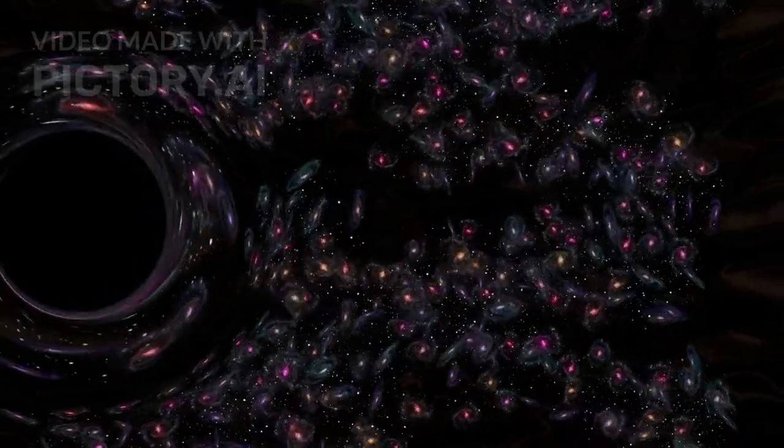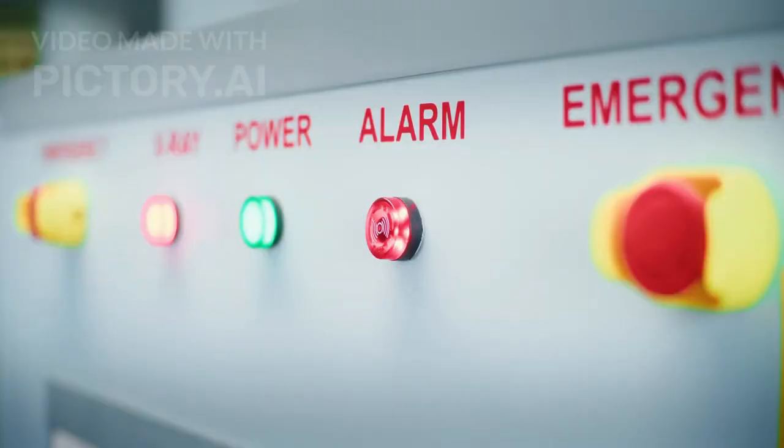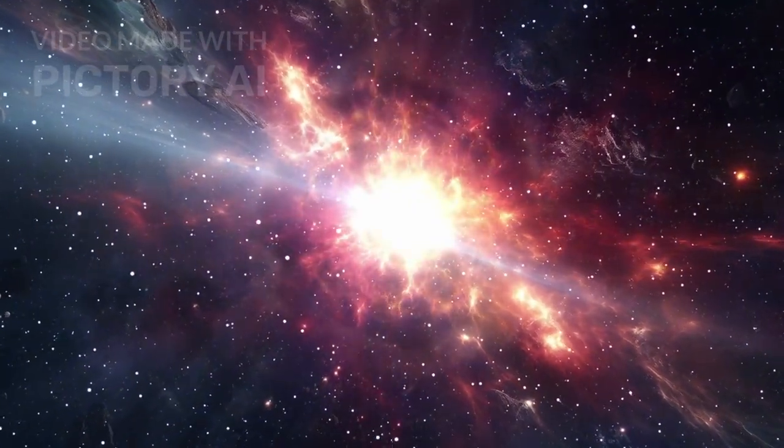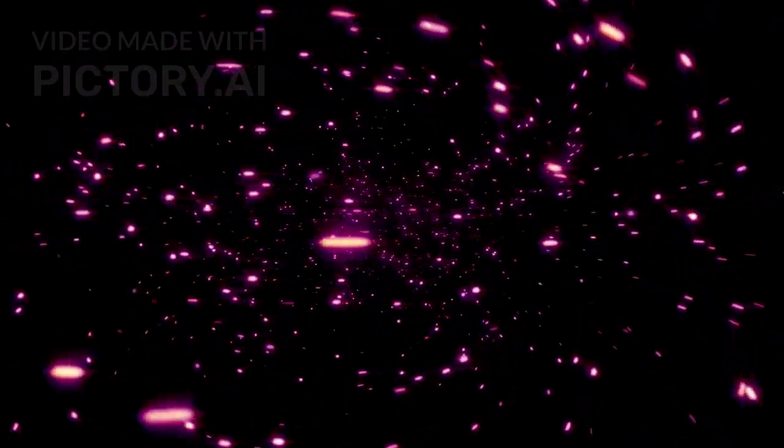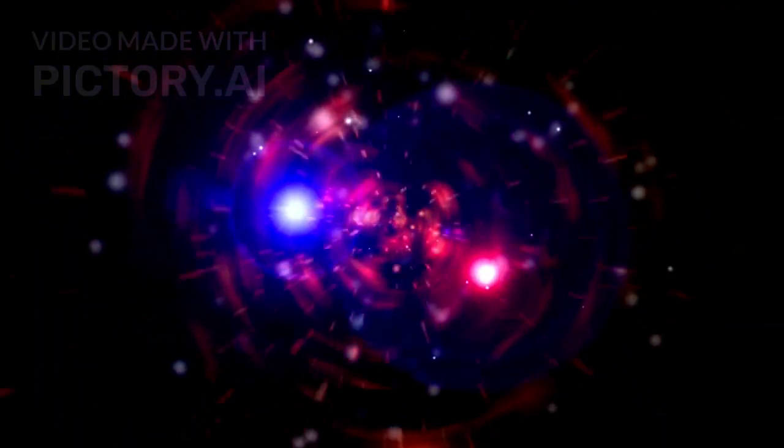Another shock came from the materials inside these galaxies. JWST detected carbon, oxygen, iron, and other heavy elements. These elements are forged inside stars and spread through space when stars explode as supernovae. For heavy elements to exist, multiple generations of stars must already have lived and died. That process usually takes billions of years. Yet JWST found these materials in galaxies only a few hundred million years old.